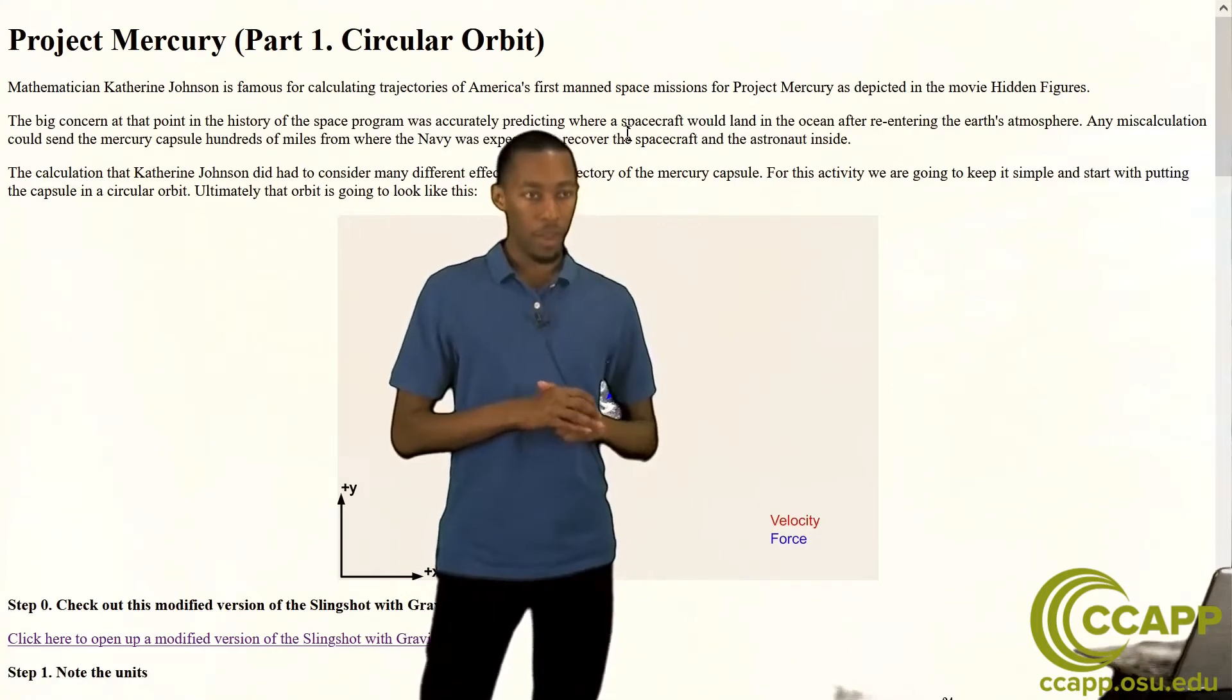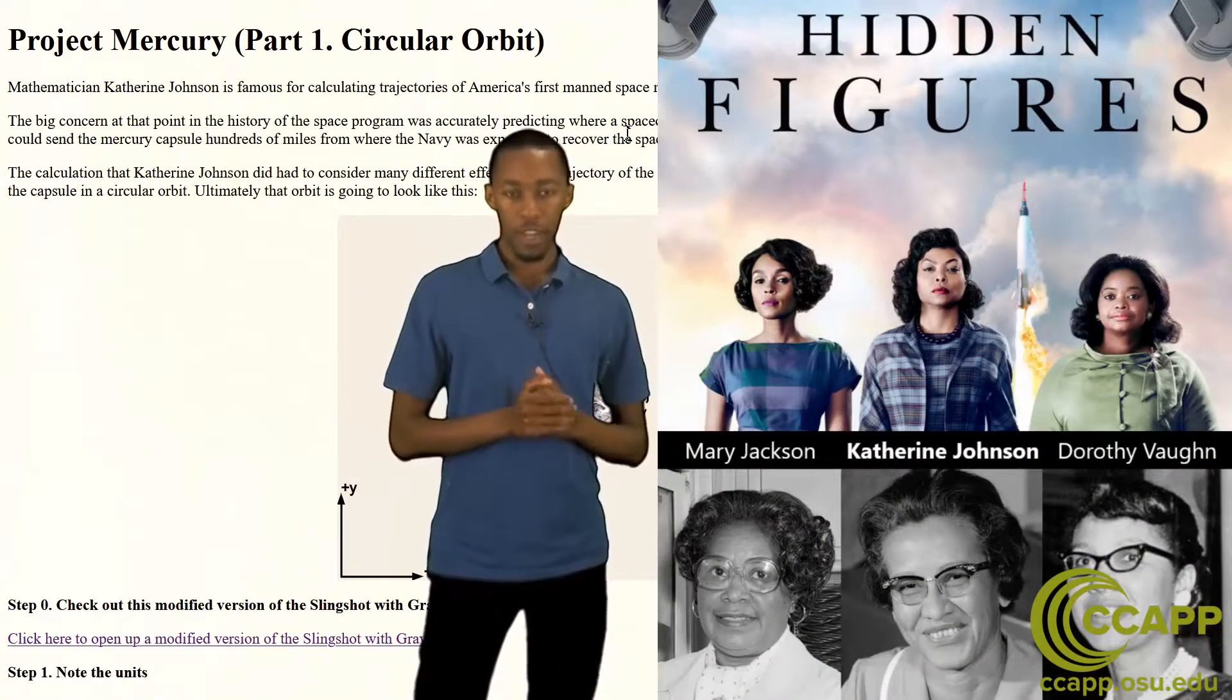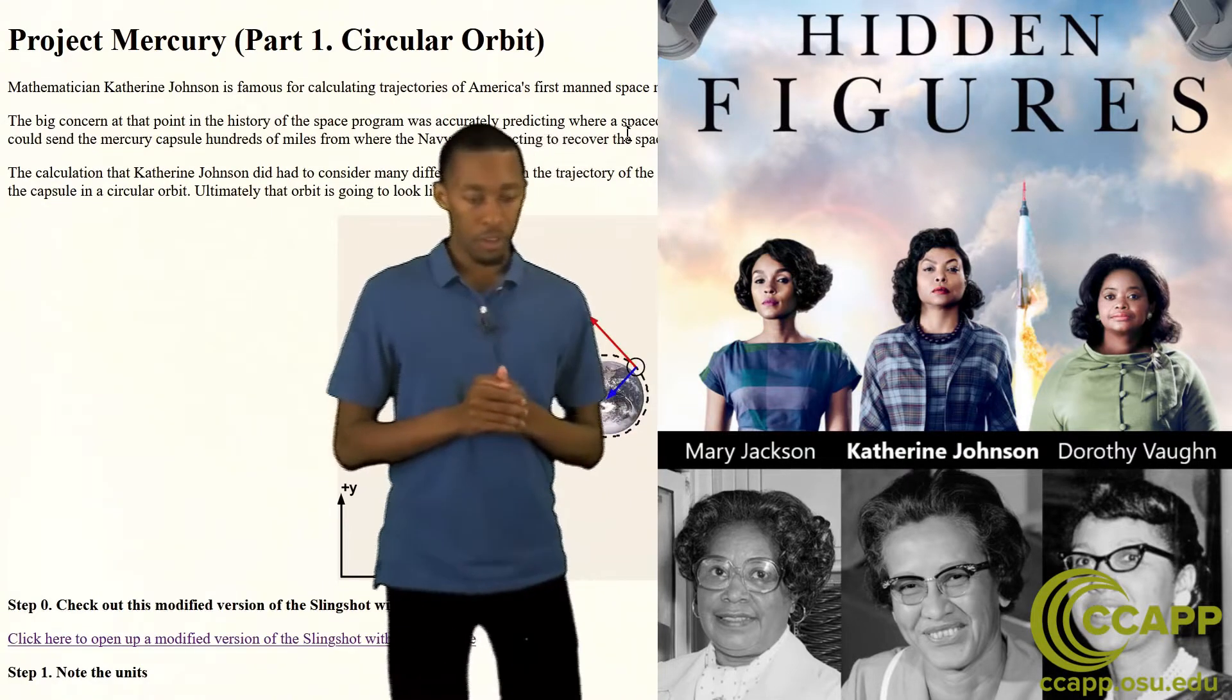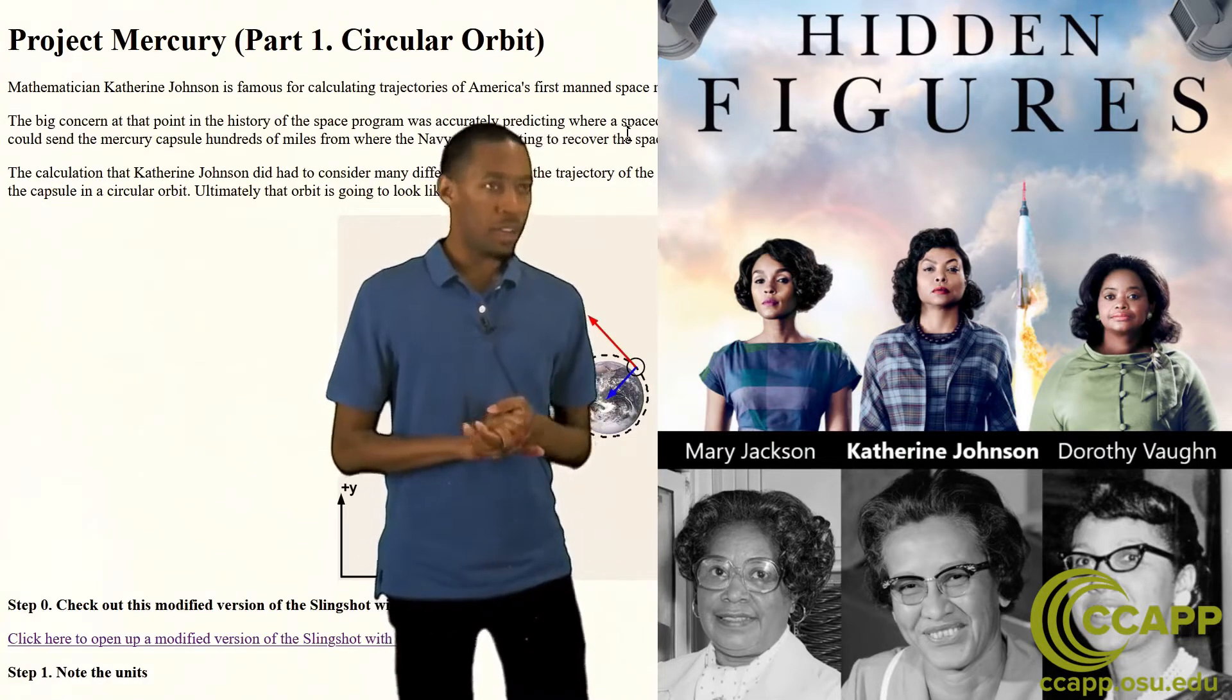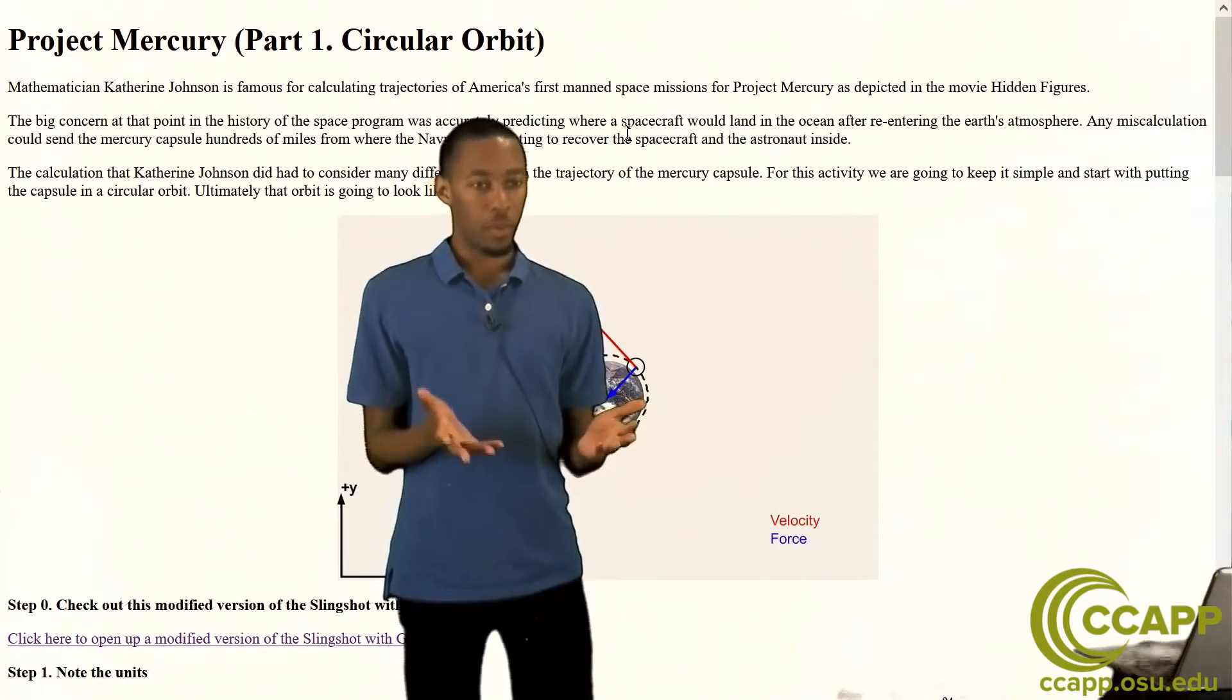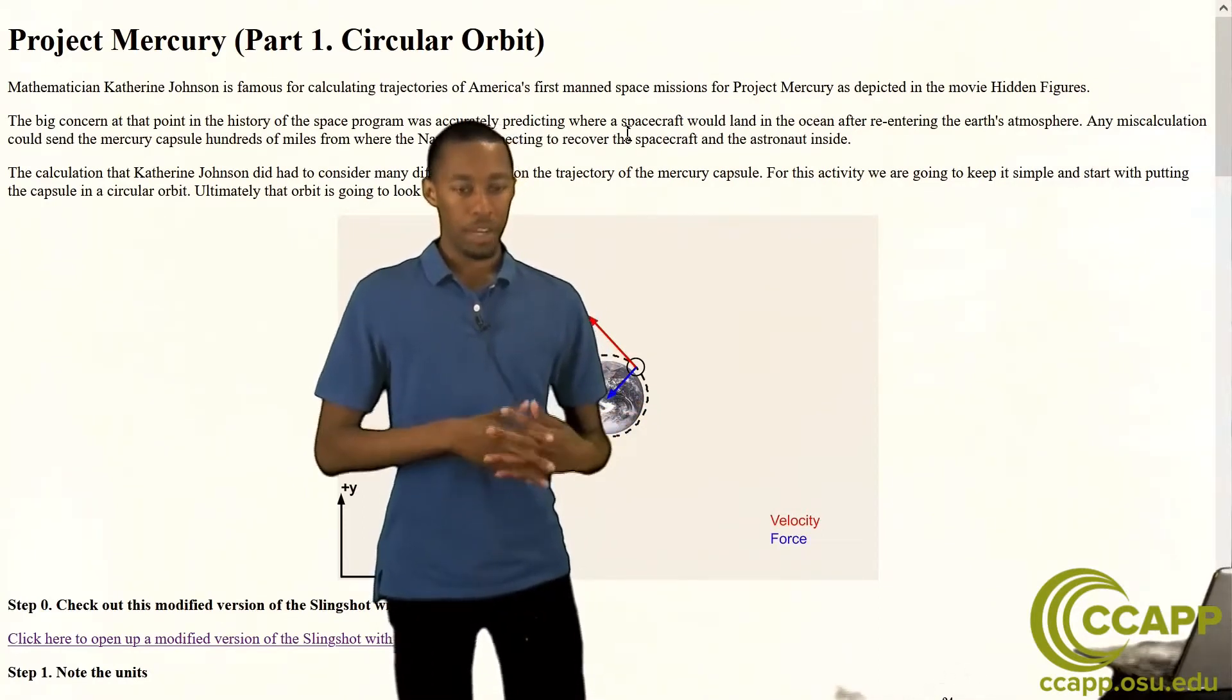Some of you might have seen the movie from about three years ago called Hidden Figures. That movie focused on her accomplishments and those of two other black female scientists. One of the things you might have had questions about is what exactly is the math she was doing in order to help people come back to Earth successfully.